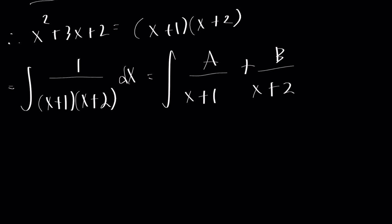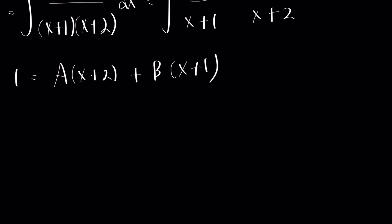And to do that, we have to get a common denominator. So we could set 1 equal to a times x plus 2 plus b times x plus 1. And now we could plug in some values that cancel it out.